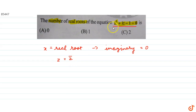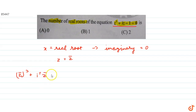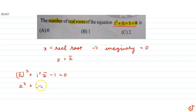Now taking the conjugate of this equation, we get z̄³ + ī·z̄ - 1 = 0. Note that the conjugate of 1 is 1 only. Since z = z̄, and ī = -i, we get z³ + (-i)·z - 1 = 0.